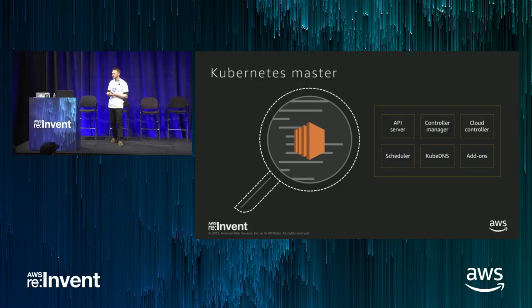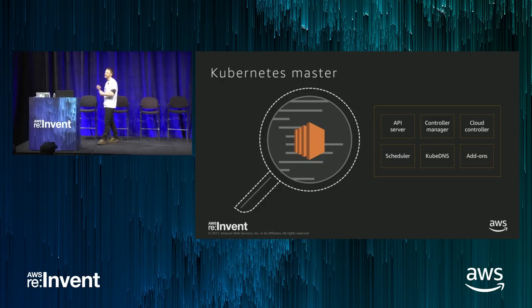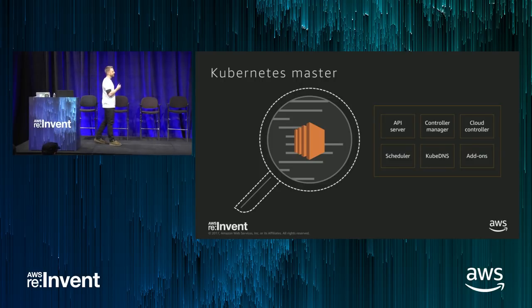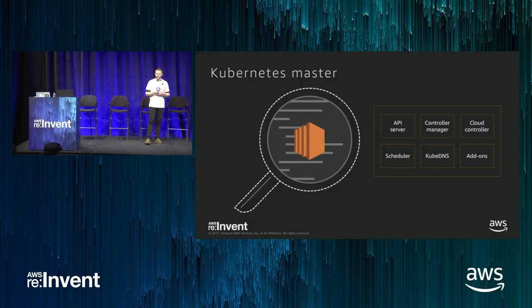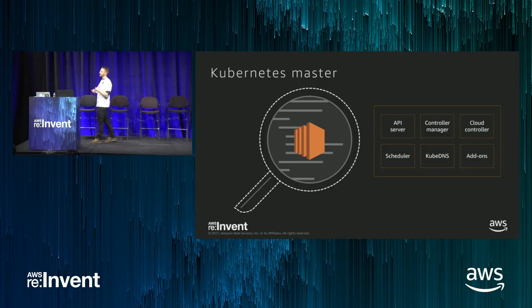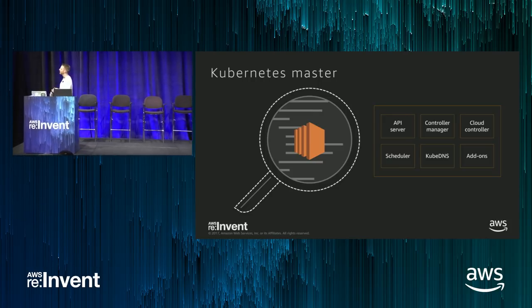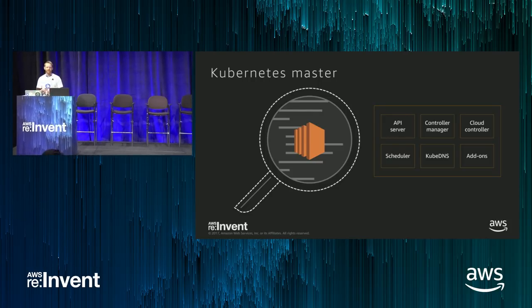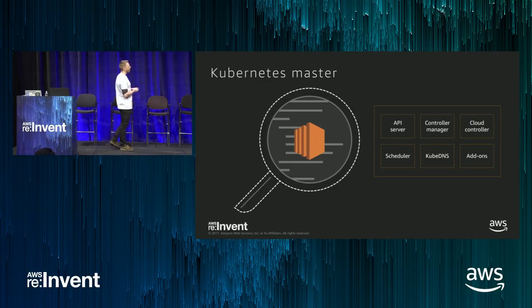Zooming in on what's running on the masters: there's the API server, which serves all your API requests; the controller manager, which runs various system processes inside Kubernetes; and the scheduler, which makes placement decisions by taking your workloads and placing them onto nodes in the cluster. You can also run specific add-ons on the masters, such as KubeDNS, which is a DNS service for native service discovery, or the Kubernetes dashboard, which is the GUI front-end.